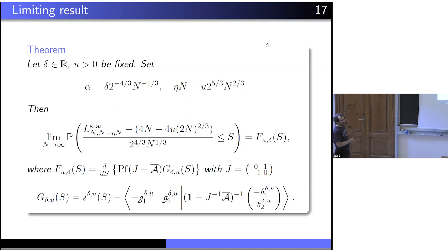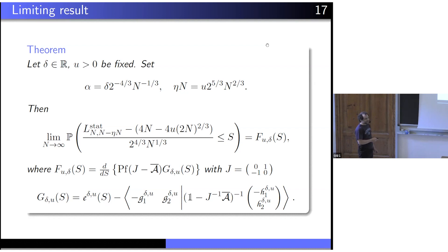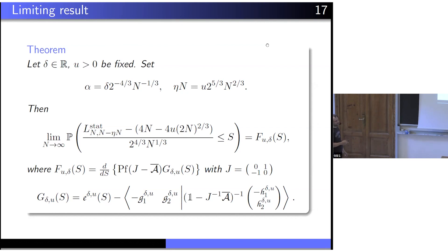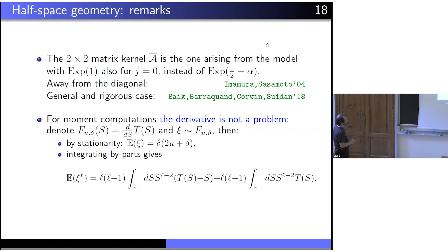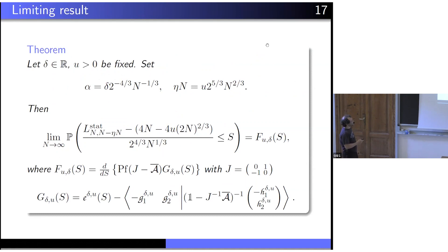The main result — the half-space analog of the Baik-Rains distribution — is the following: the centered, n^{1/3}-scaled last passage time has a distribution function whose structure is a derivative (from the shift argument) of the point-to-point term without the boundary, times a function g. This g has the same mathematical structure as in the full-space case except that there are 2×2 blocks instead of 1×1 blocks. The strategy to derive it is essentially the same as for the full-space Baik-Rains distribution.